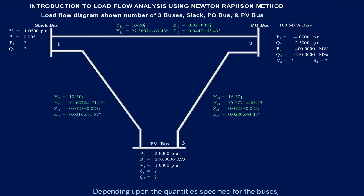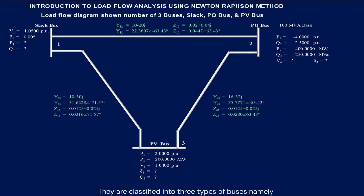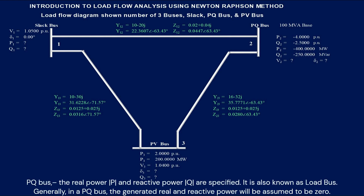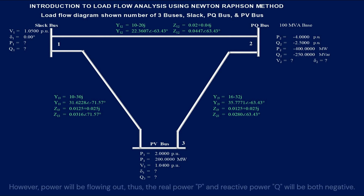Depending upon the quantities specified for the buses, they are classified into three types of buses. Namely, PQ bus: the real power P and reactive power Q are specified. It is also known as the load bus. Generally, in a PQ bus, the generated real and reactive power will be assumed to be zero. However, power will be flowing out. Thus, the real power and reactive power will both be negative.